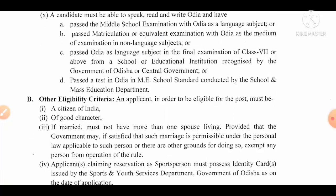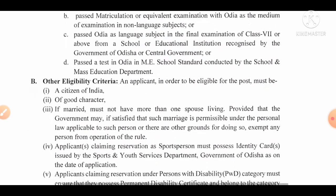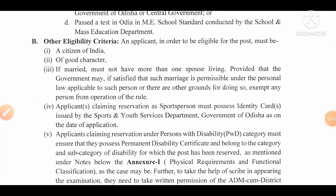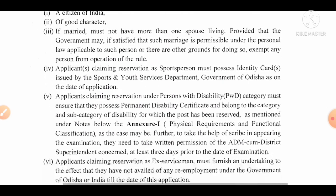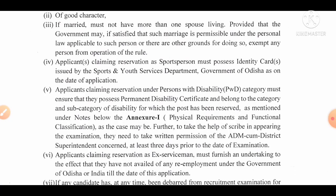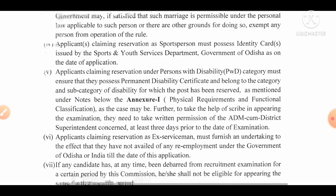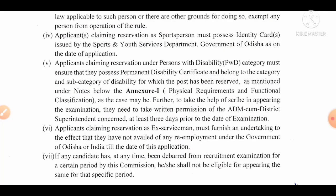Candidates fulfilling all these qualifications can apply. Regarding other eligibility criteria, the applicant must be a citizen of India of good character. If married, must not have more than one spouse living. Sportsmen must possess an identity card issued by the Sports and Youth Services Department, Government of Odisha, as on the date of application. Persons with disability must possess a permanent disability certificate belonging to the relevant category for which the post is reserved.